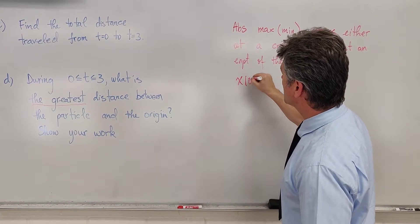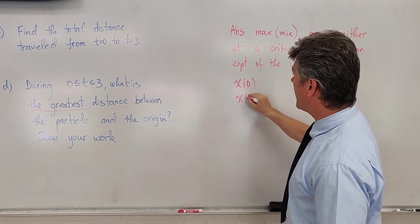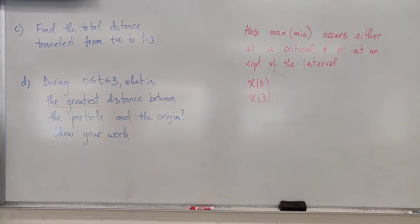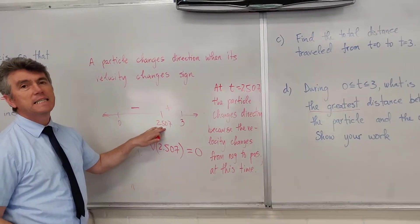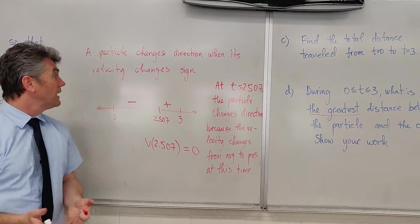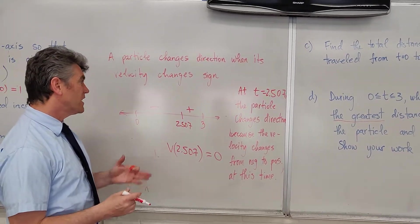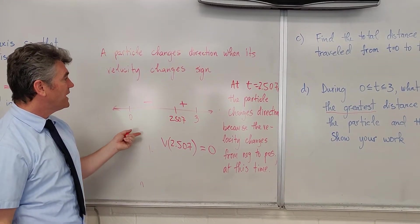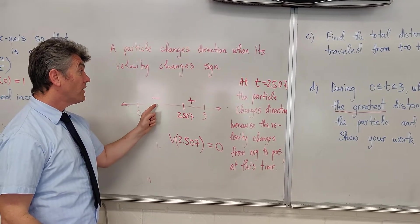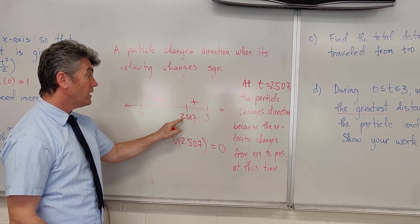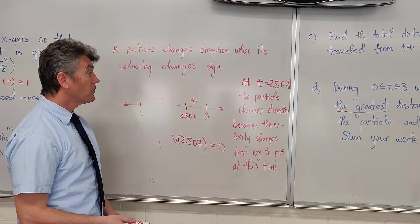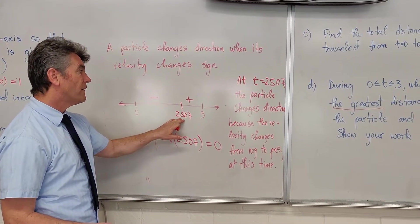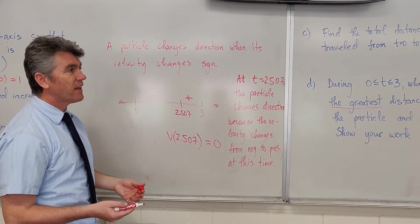So we're interested in x of 0, interested in x of 3, and the critical number is 2.507. To be quite honest, I really don't care about 0 and 3. How come? Well, let's see what is happening here. The velocity changes from negative to positive only once. Based on this, we will get an absolute min at 2.507. So the greatest distance should happen at that time.